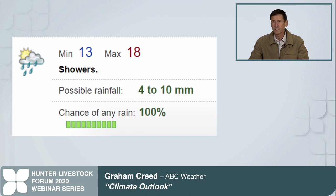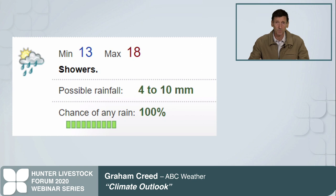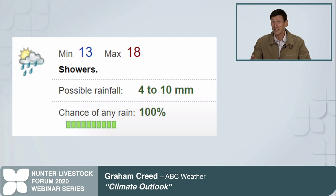So you need to look at these forecasts remembering those key figures. The chance of rainfall is just that you're going to get some drops. The rest of it is always a 50% chance of the figure on the left, and just a 25% chance of the higher figure on the right.